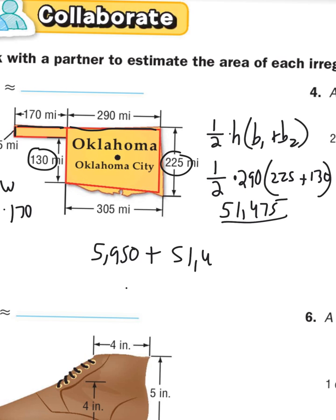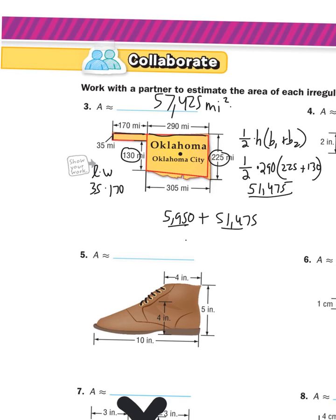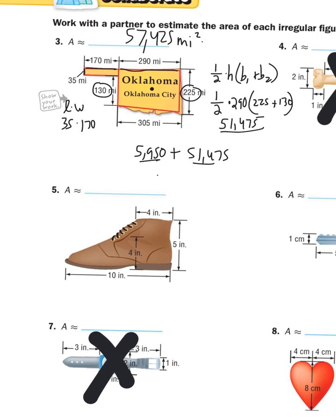The smaller rectangle is 5,950 square miles. Adding the trapezoid and the rectangle together gives 57,425 square miles for Oklahoma. If you treated that big shape as a rectangle instead of a trapezoid, that's not a big deal.